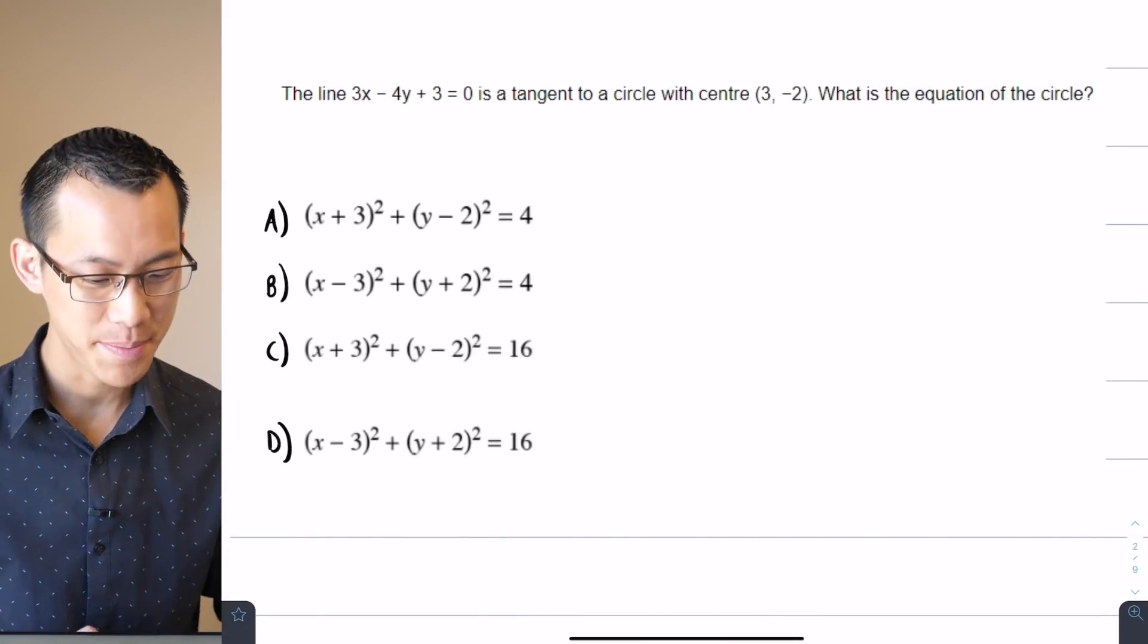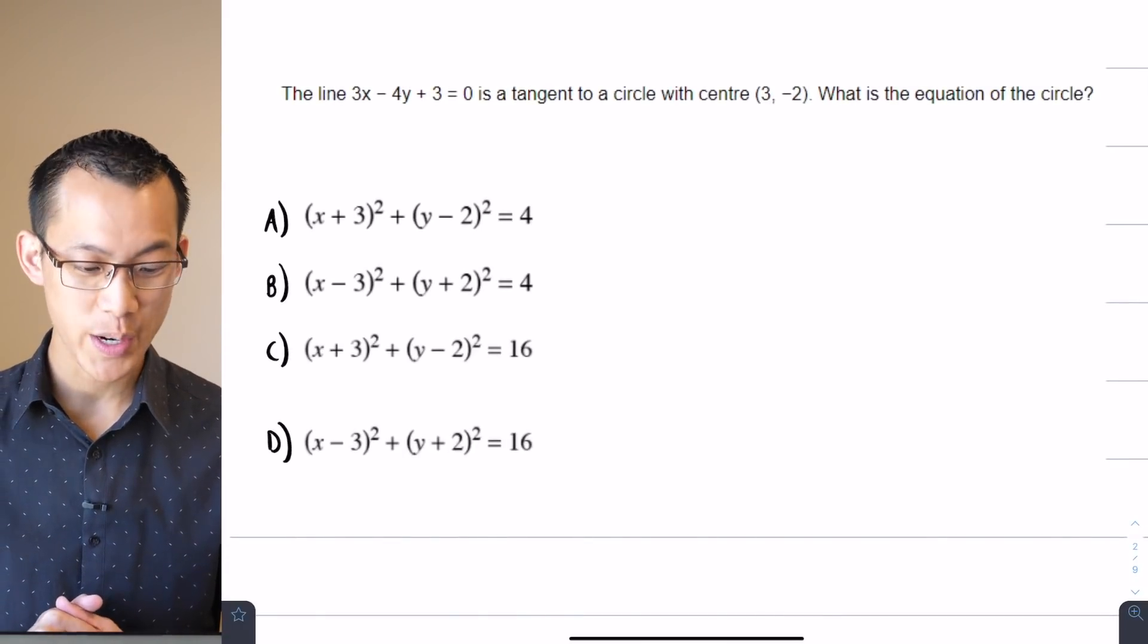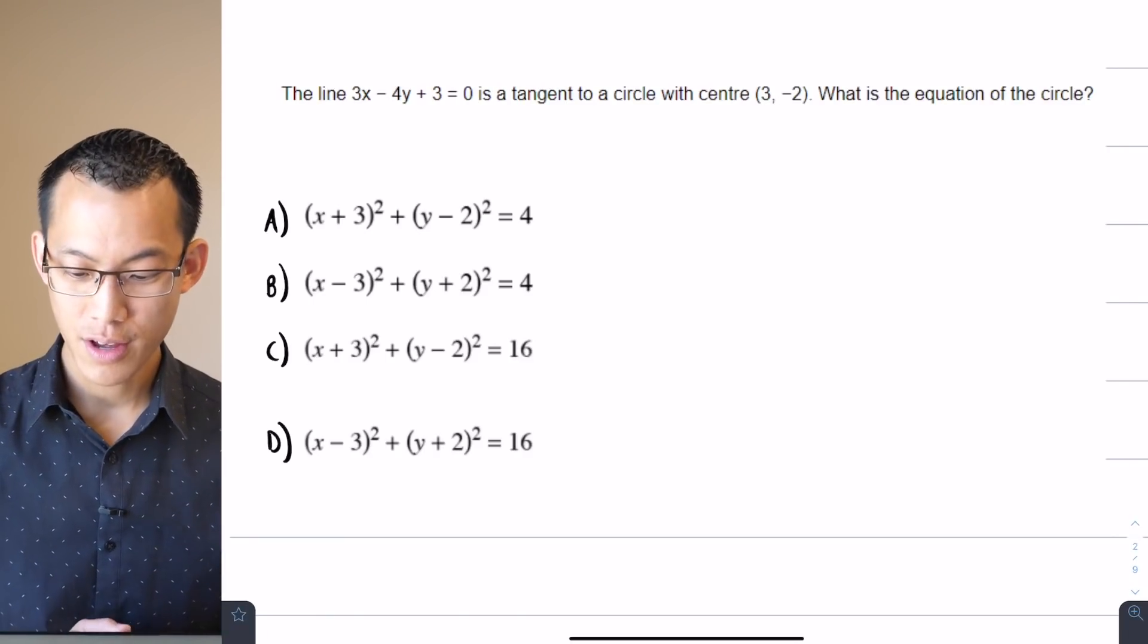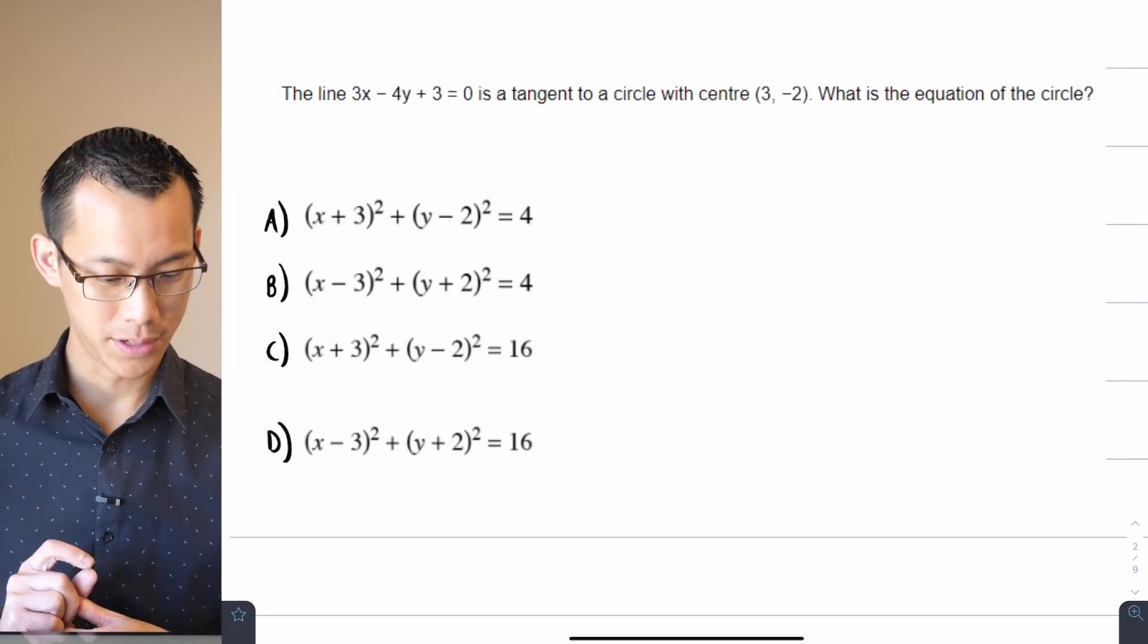The line 3x minus 4y plus 3 equals 0 is a tangent to a circle with center (3, -2). What's the equation of the circle?